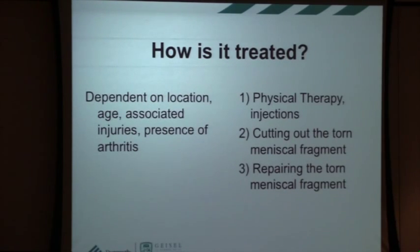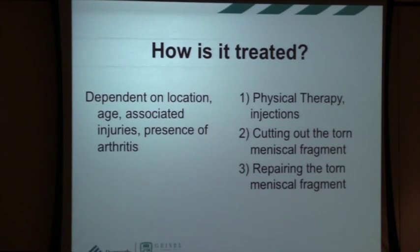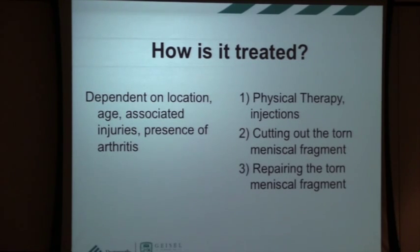How is it treated? A lot depends on the location of the tear, how old the person is, any associated injuries, and the presence of arthritis in the knee. Once you have arthritis with an associated meniscal tear, the cow's kind of already out of the barn — dealing with the tear won't necessarily address the core problem of degenerative changes. The most conservative end of things: physical therapy and injections with steroids or visco-supplementation can help calm down a knee. While it may not cure a tear in the area that won't heal, it can make it less symptomatic. There are two basic surgical options: cutting out the torn meniscal fragment, which is done more commonly, or repairing the torn fragment.